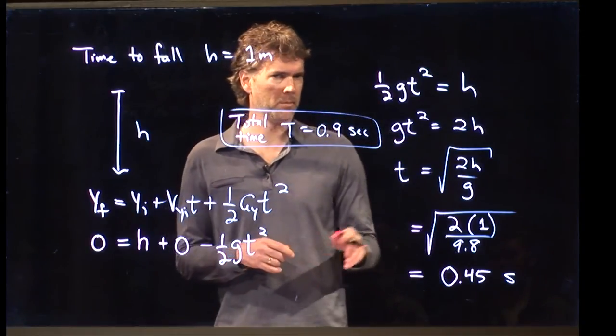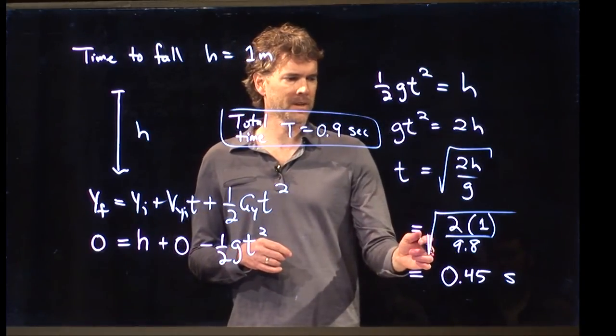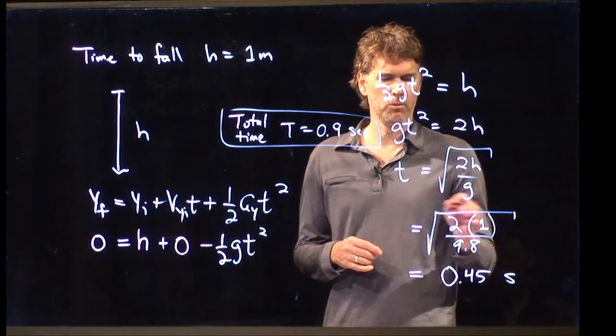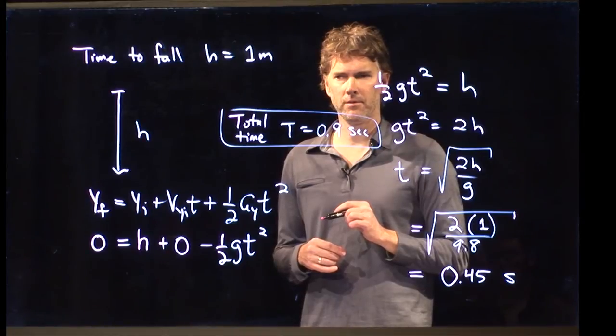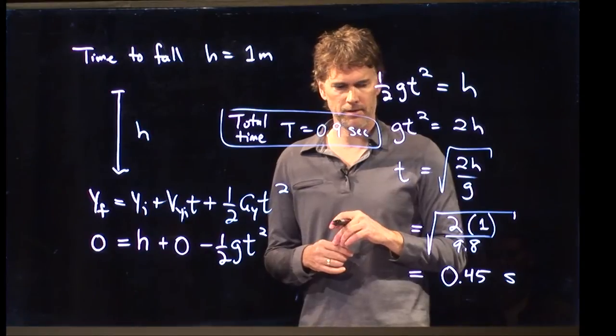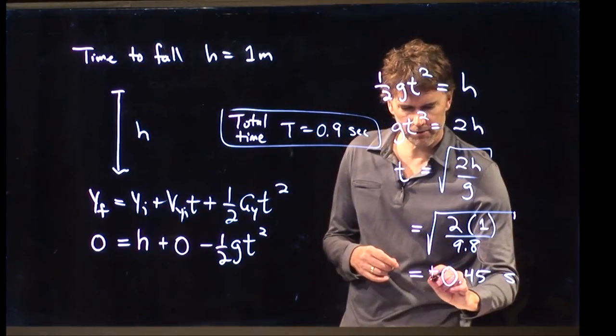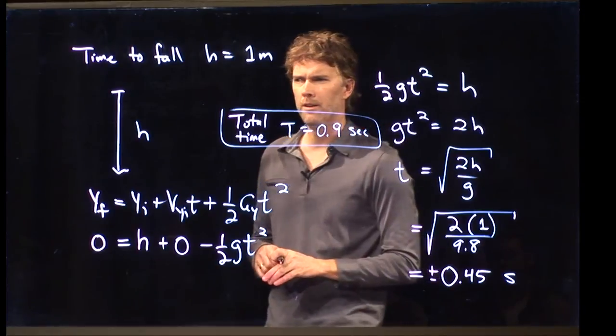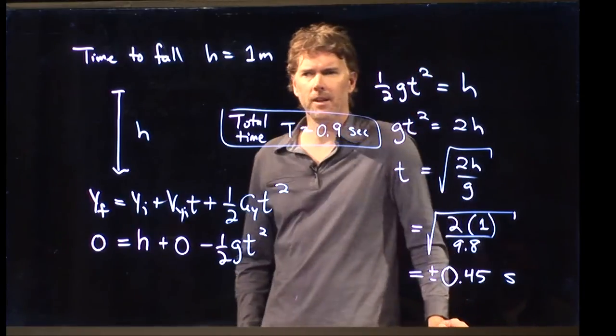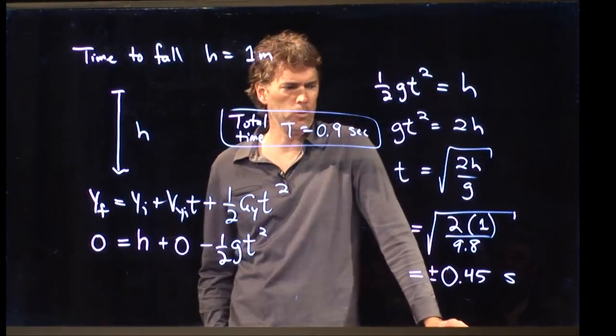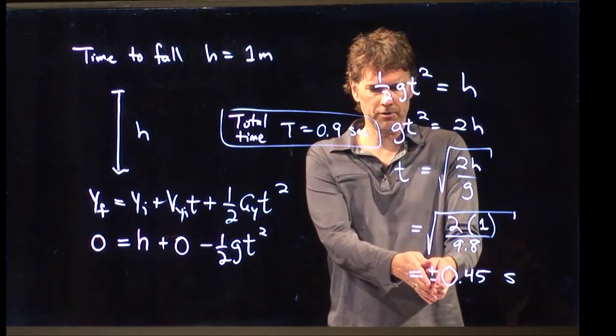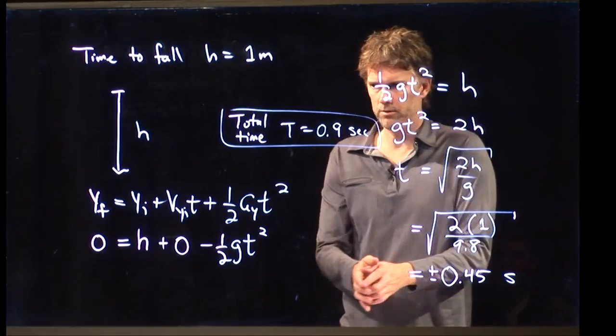Now there's something a little interesting about our answer down here, which is the following. When we did the square root, what do you get when you take a square root? Plus or minus. Exactly. Plus or minus. So really we should put plus or minus here. And now you say, well wait a minute, what is the significance of the minus? We just assumed that it was positive 0.45 seconds. But there's a minus there. Does that have any physical significance?